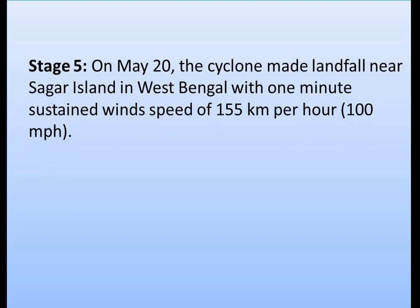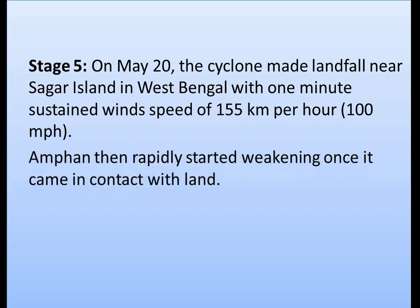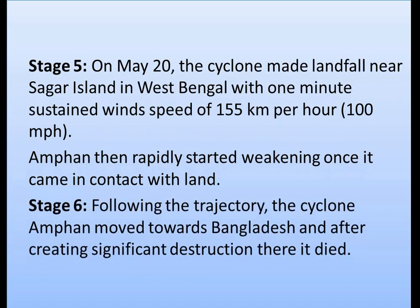In Stage 5, on May 20, the cyclone made landfall near Sagar Island in West Bengal with one-minute sustained wind speed of 155 kilometers per hour (100 miles per hour), and thereafter rapidly started weakening once it came in contact with land. In Stage 6, following its trajectory, cyclone Amphan moved towards Bangladesh and, after creating significant destruction there, it died.